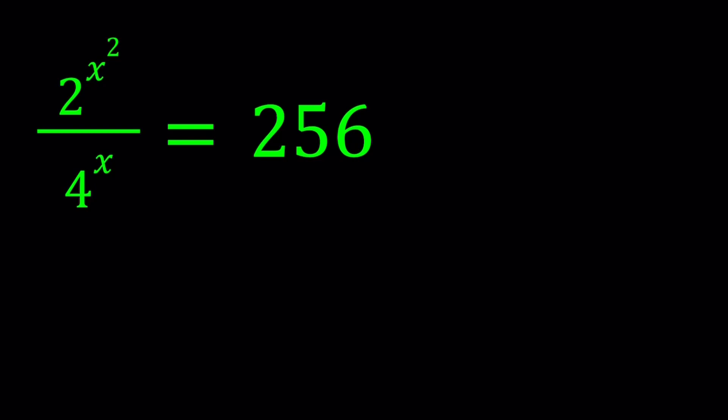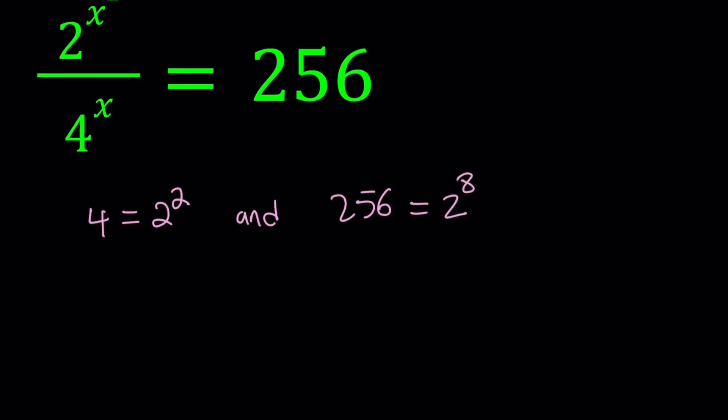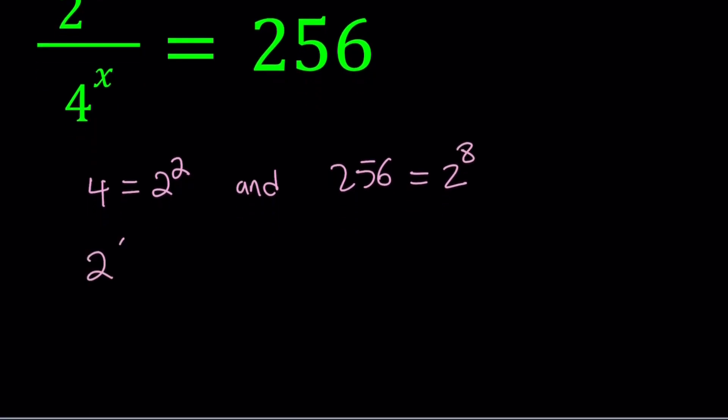Let's go ahead and write the 4 as 2 to the second power and 256 as 2 to the eighth power. That gives us the following: 2 to the power x squared divided by 2 squared to the power x equals 2 to the power 8.